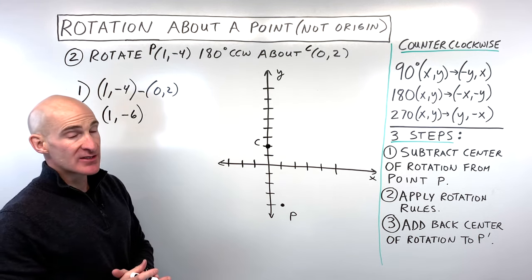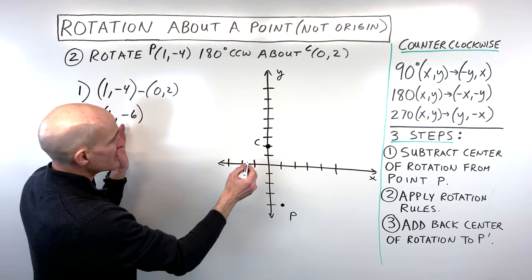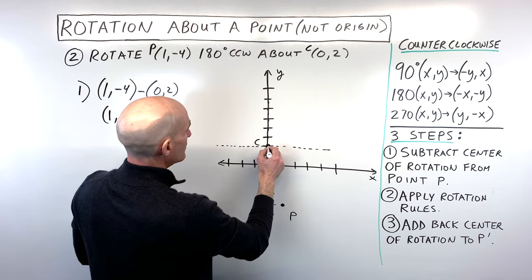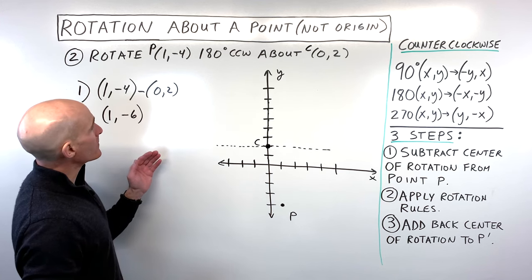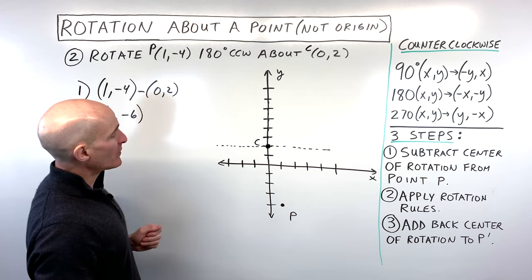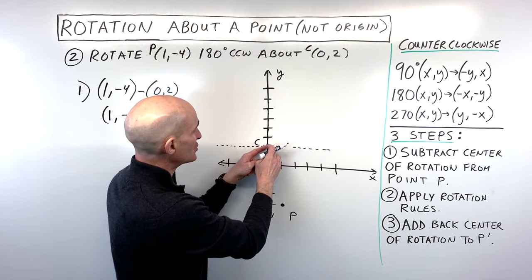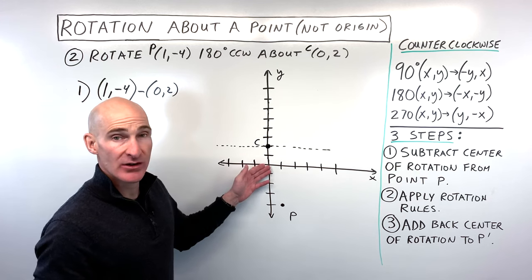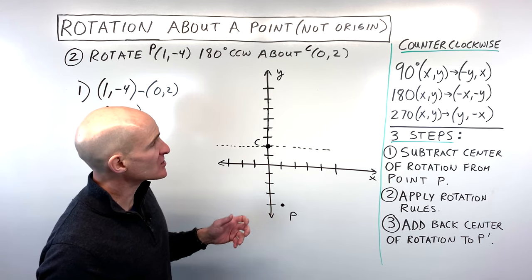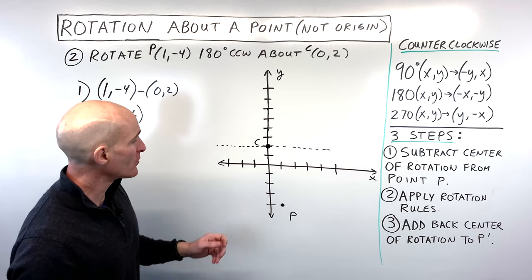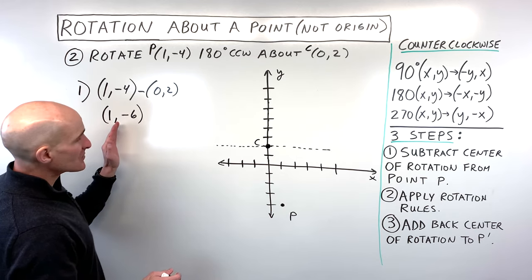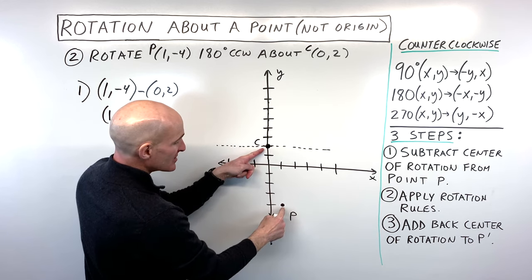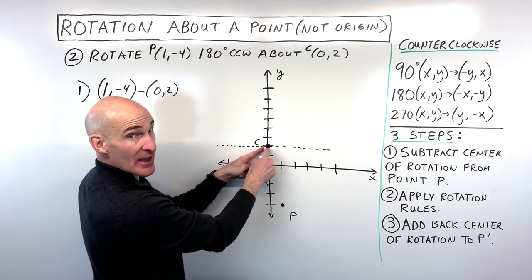To understand this more deeply, think of the center of rotation as our new origin. When we subtract (0, 2), we're basically taking the center of rotation and moving it back to where the normal origin is. That allows us to apply our rotation rules just as we normally would when rotating about the origin. From the perspective of this new center, our point (1, -6) is right 1, down 6.